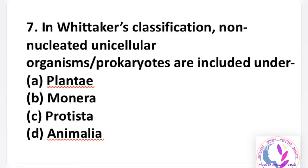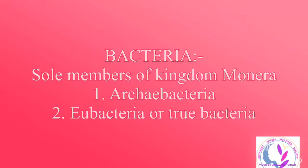Monera consists of bacteria, which are the sole members of the Monera kingdom. Hundreds of bacteria are represented in a handful of soil. There are two types of bacteria: first is archaebacteria and second is eubacteria. Archaebacteria are adapted to recording environments, like halophiles, methanogens, or thermoacidophiles.